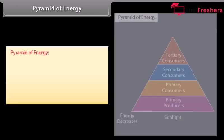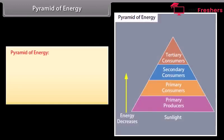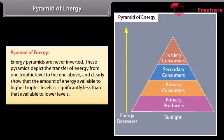Pyramid of energy: the amount of energy available to higher trophic levels is significantly less than that available to lower levels.